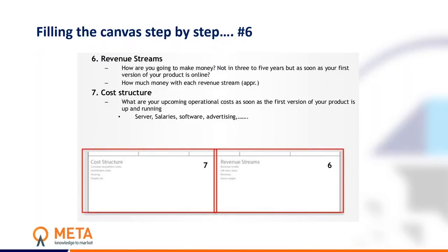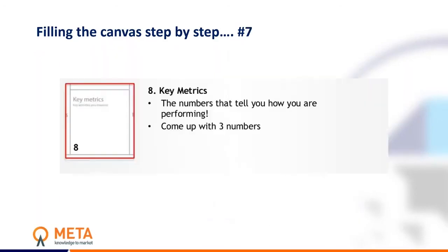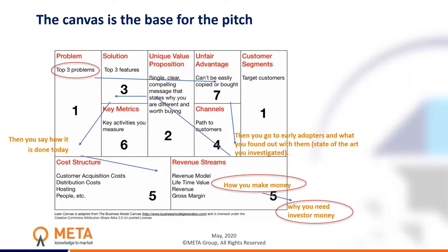The Lean Canvas may not perfectly fit the purpose of exploiting research results if interpreted strictly, but if we give a broader interpretation to revenue streams and cost structure — towards sustainability — we realize it is a very helpful tool to put things in the right place. Last but not least, since we would like to achieve sustainability goals as part of the roadmap, we need to understand what the key metrics are that we need to monitor to understand if we are moving in the right direction. Powell will show us how the Lean Canvas is the base for a good pitch.